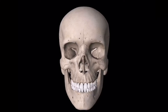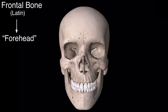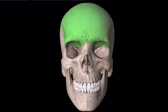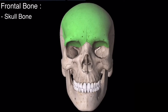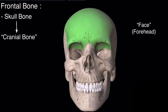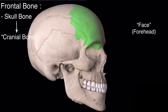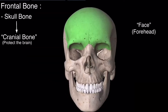In this video I will discuss the frontal bone in detail. The word frontal is a Latin word which means forehead. The frontal bone is a bone of the skull and among the skull bones it is a cranial bone, although this bone also forms part of the face — the forehead — but the majority part of this bone forms the protective covering around the brain.